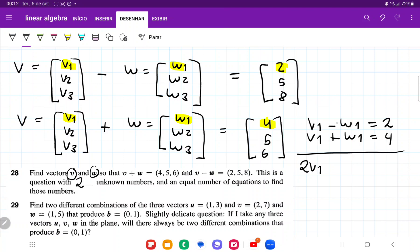When we add these equations, we have 2v1, the w1 cancels, equals 6. Therefore v1 equals 3.